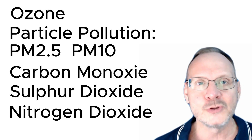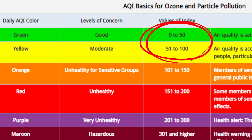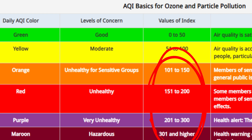The AQI values range from 0 to 500, and the higher the AQI value, the worse the air quality is. AQI values at or below 100 are generally thought of as satisfactory. When AQI values are above 100, the air quality is considered unhealthy — at first for certain sensitive groups of people, and then for everyone as the AQI values get higher.